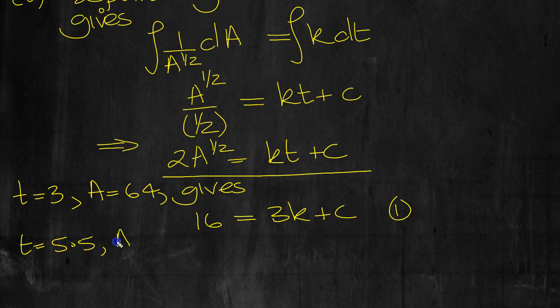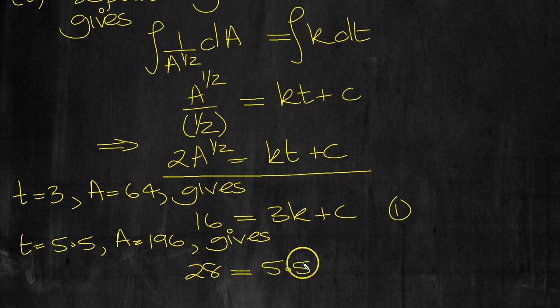And then t equals 5.5, wasn't it? Area equals 196. Let's see what we get here. 196 to the half is 14. 2 times 14 is 28. K times t, 5.5K, rather, plus C.